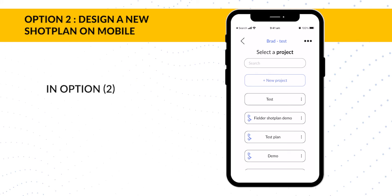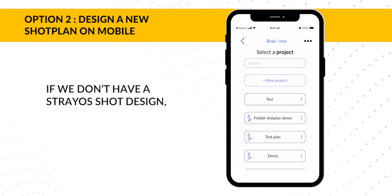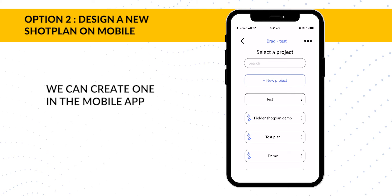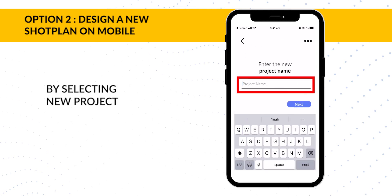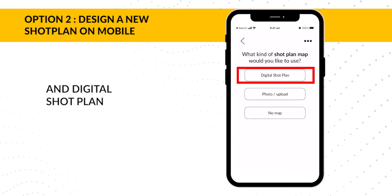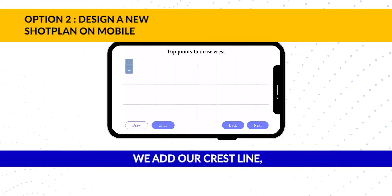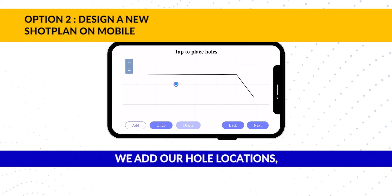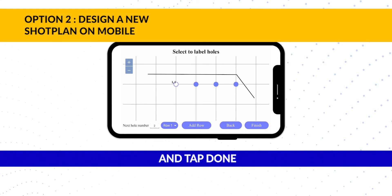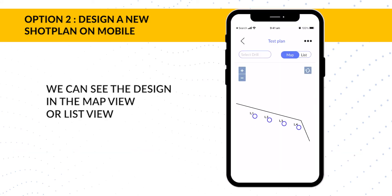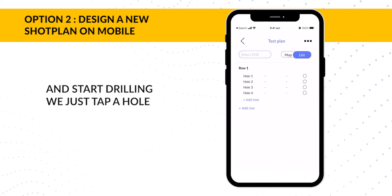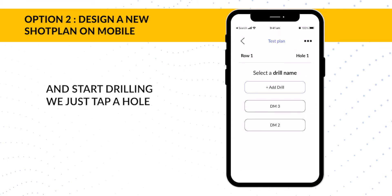In option two, if we don't have a Strayos shot design, we can create one in the mobile app by selecting New Project and Digital Shot Plan. We add our Crest Line, we add our Hole Locations, then we label our holes and tap Done. We can now see the design in our map view or list view, and to start drilling we just tap a hole.